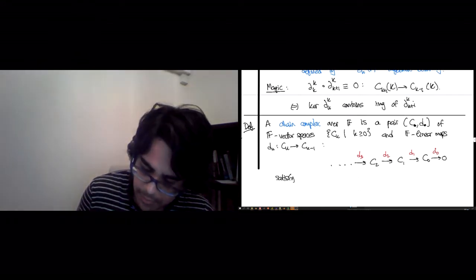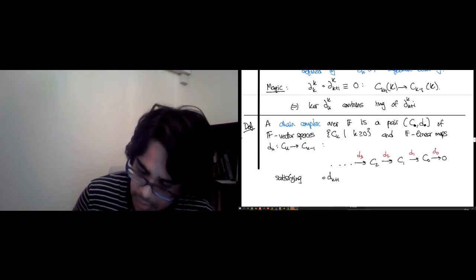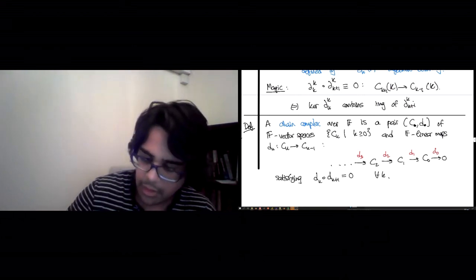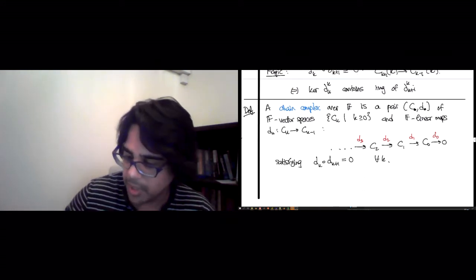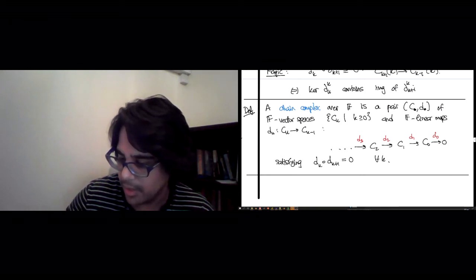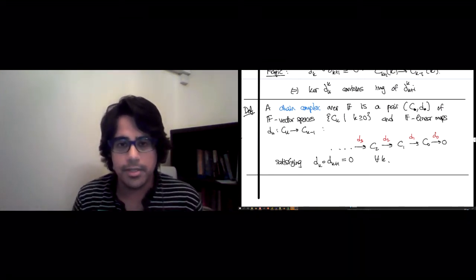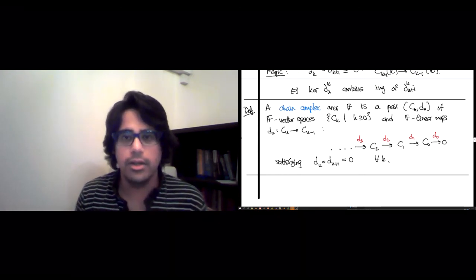Satisfying Dk plus 1 Dk, that composite, 0 for all k. So we are able to produce this purely algebraic object. It's just a whole bunch of matrices connecting linear spaces. Sorry, vector spaces. And we're able to construct this for any simplicial complex. And in the next lecture, we will study properties of these chain complexes in order to understand what they know about the simplicial complex.